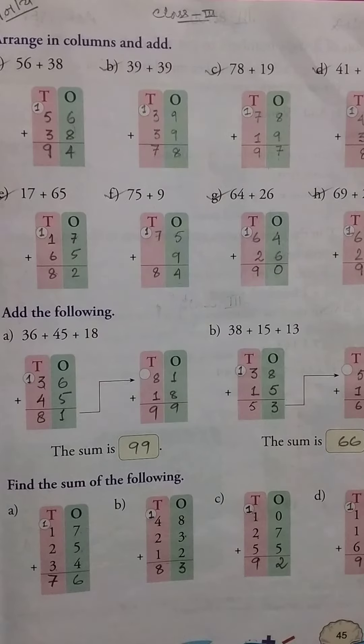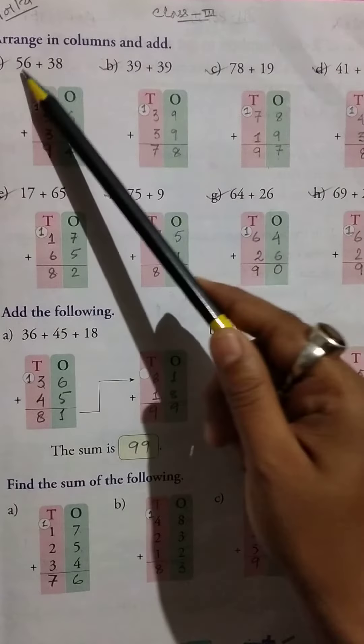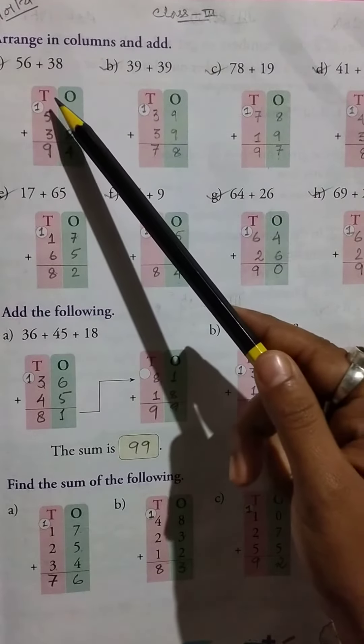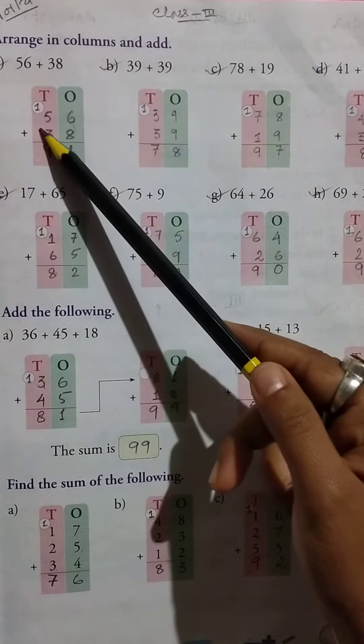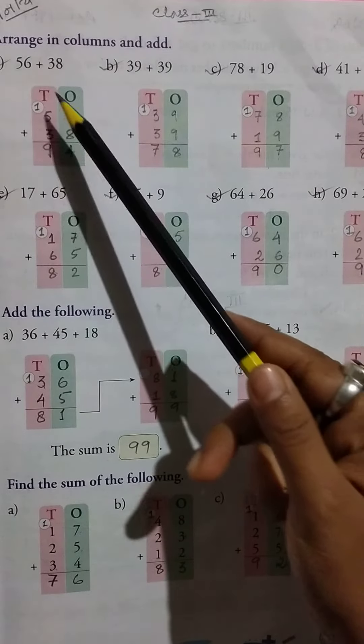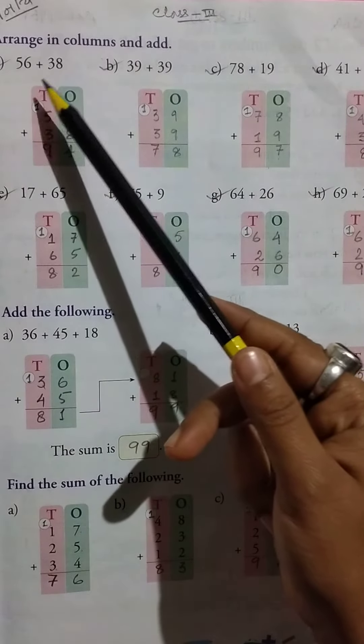Hello students, good morning. Class 3 mathematics, date 15th of January 2021, page 45. So let's start number 2. Arrange in columns and add. Firstly, arrange the columns, then add. So 56 plus 38.